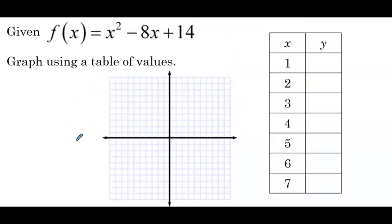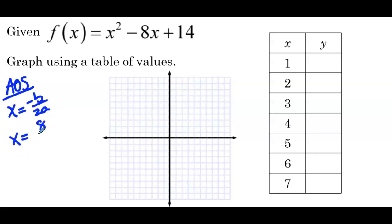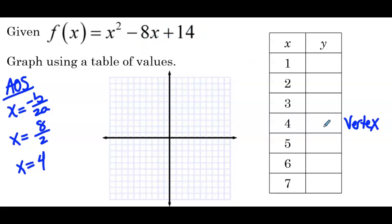To graph using a table of values: since our x-intercepts are irrational, they won't appear directly in the table. We can find the axis of symmetry: x = −b/2a = 8/2 = 4. So x = 4 is the vertex. Substituting: 16 − 32 + 14 = −2, so the vertex is at (4, −2).